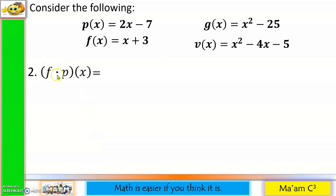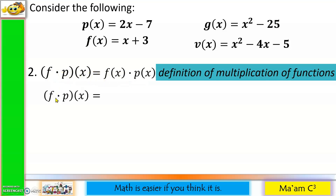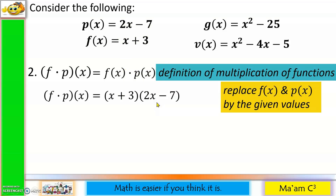Next, let us try (f · p)(x). The first step is the definition of multiplication of functions, so this becomes f(x) · p(x). We replace f(x) and p(x) by the given values: f(x) is (x + 3) times p(x) which is (2x − 7).